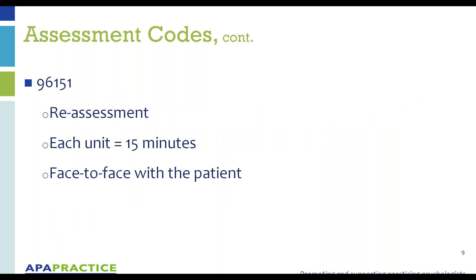Code 96151 is the reassessment code — further testing or further observation. If you go back, say on Tuesday, or later in the same day, the patient is coming out of a coma, has just been injected with corticosteroids, and you want to come back several times throughout the day to see whether there's been a significant impact — this is what the reassessment codes are all about. 96150 is the initial base code; 96151 is the reassessment code. Always face-to-face with the patient.